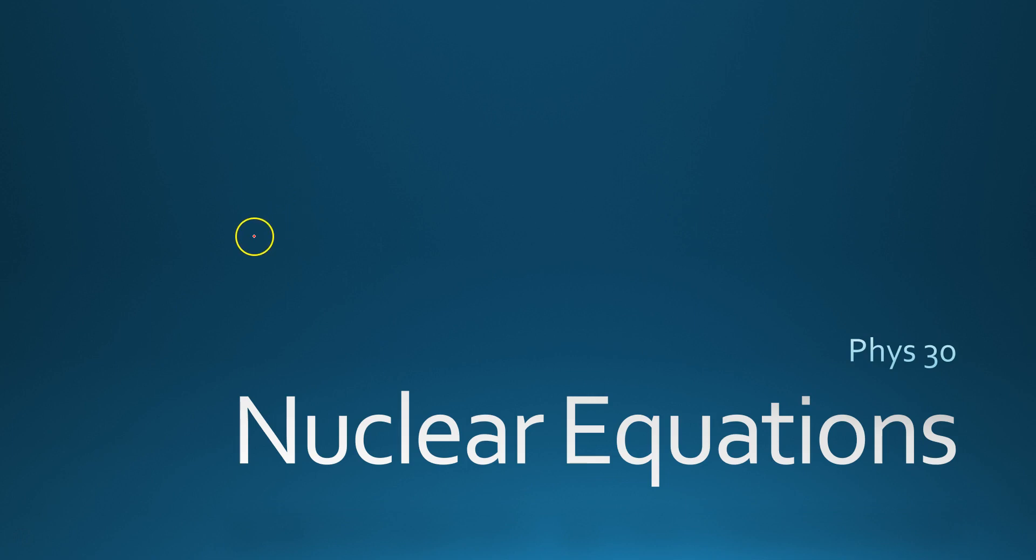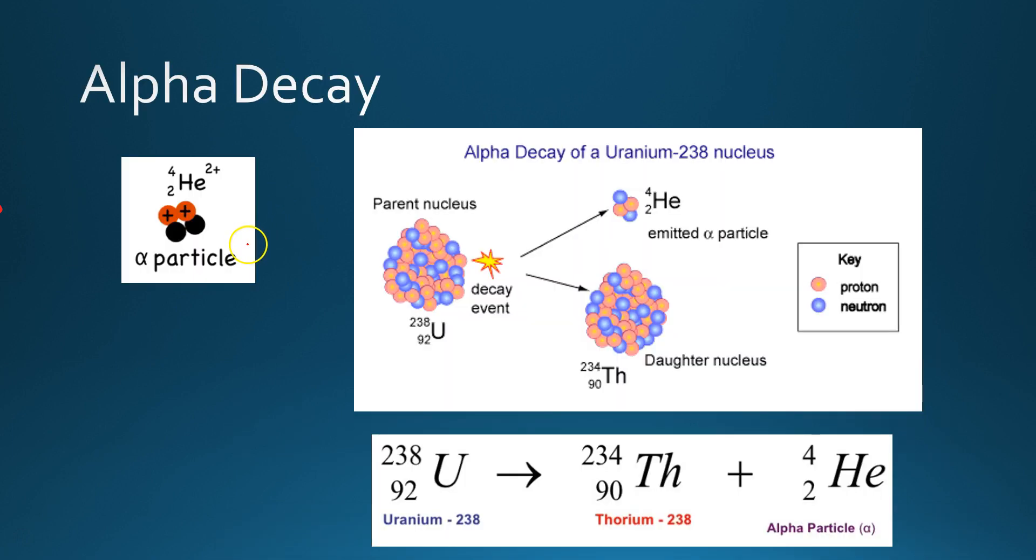So last class we talked about nuclear equations. We're going to briefly review a bit of those. The first one we looked at was alpha decay, where we had an alpha particle, sometimes just called a helium atom because it has two protons and two neutrons, just as a helium nucleus.